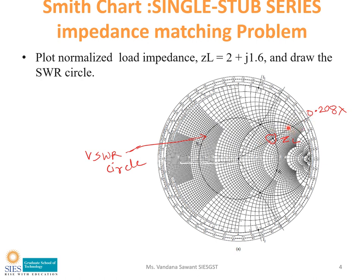Extend the line passing from ZL out of the graph. This line will intersect the wavelength circle at 0.208 lambda — that is the wavelength of the point ZL. Then the next step is to locate the position of the stub. To find the stub position, we need to find the intersection of the VSWR circle on the R equals 1 circle.